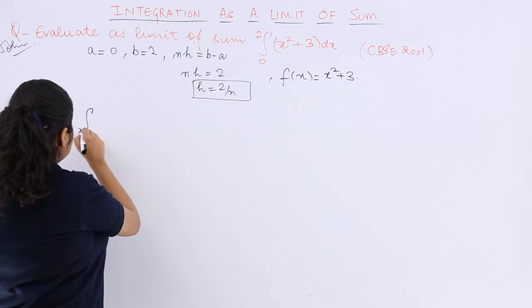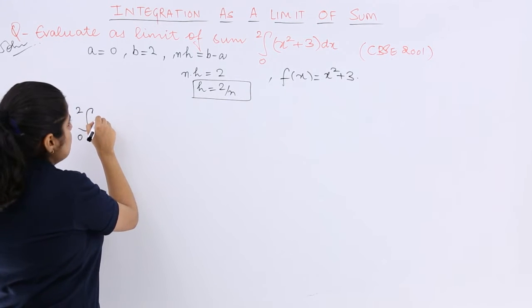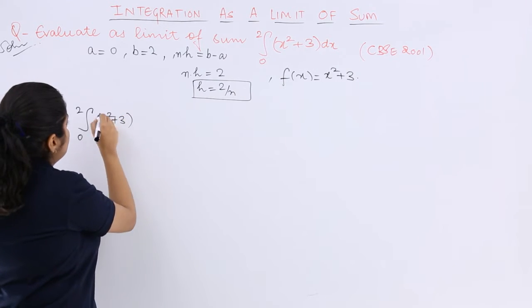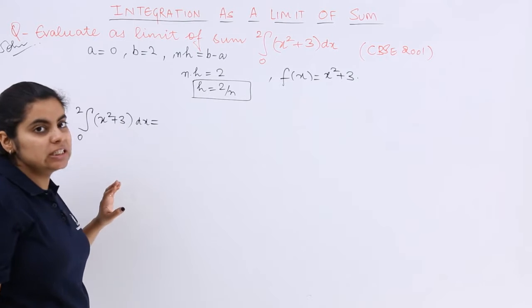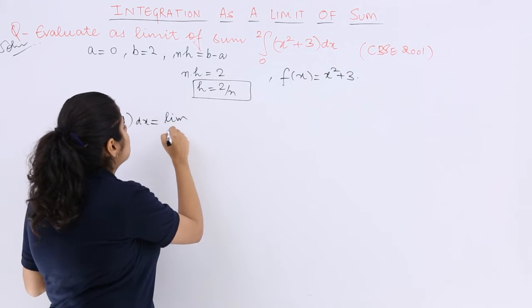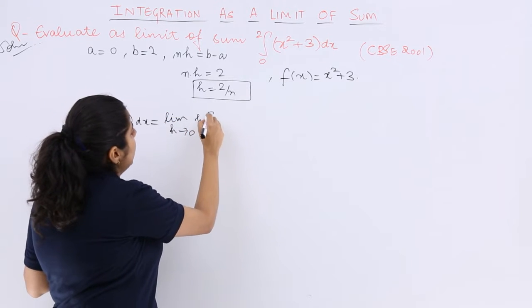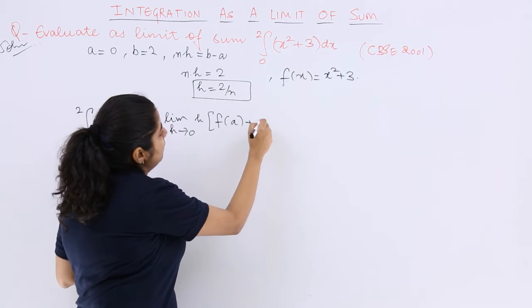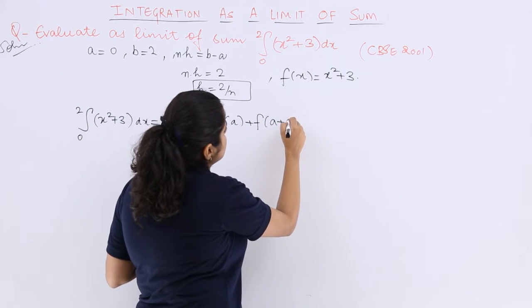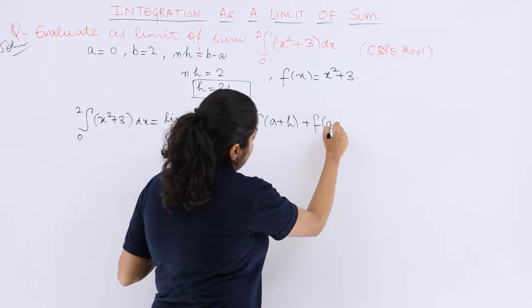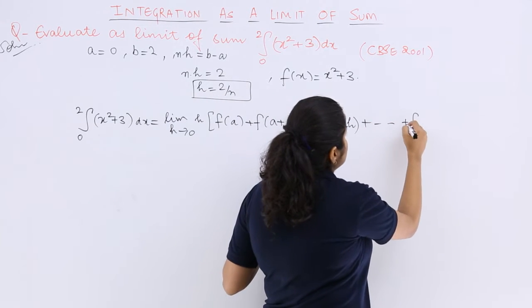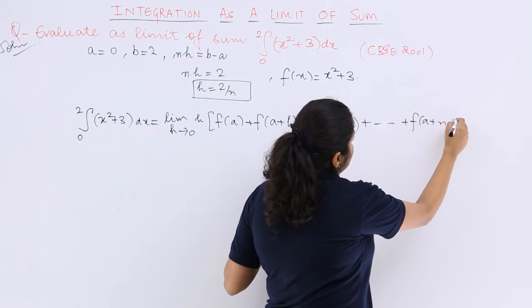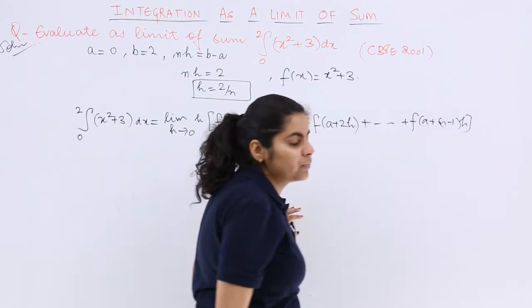Now directly let's go for the solution. I write integral A to B FX, which is x square plus 3 dx. For this integral I know the formula: limit H tends to 0, H times F of A plus F of A plus H plus F of A plus 2H and so on till F of A plus N minus 1 into H.